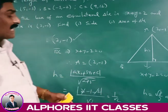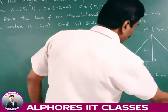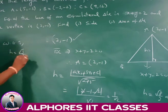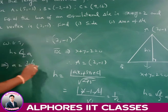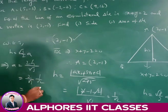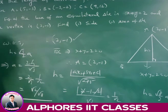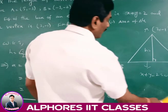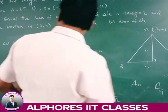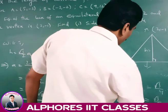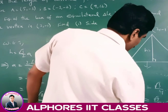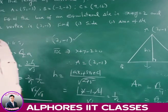For getting the side: H = (√3/2)·A implies A = 2H/√3 = 2·(1/√2)/√3 = √2/√3. The side of the equilateral triangle is √2/√3. The area = (√3/4)·A² = (√3/4)·(2/3) = 1/(2√3) square units. This is the required area of the equilateral triangle.